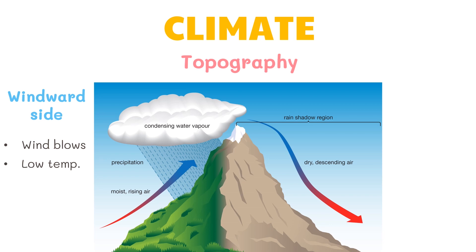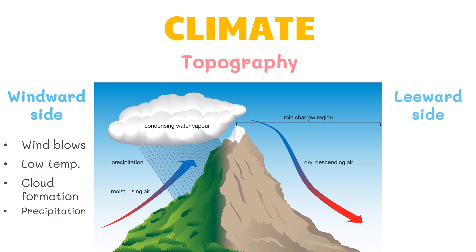On the windward side, the wind is blocked by the mountain, forcing it to move upward. As it moves up, the water vapor condenses and forms clouds. This will result in precipitation on the windward side. The air then moves down towards the opposite region called the leeward side.